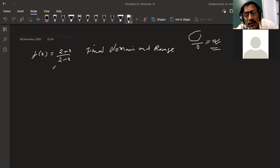So here, 2 minus x equals 0, which means 2 equals x. That means the domain is equal to R minus {2}, which is all real numbers except 2.